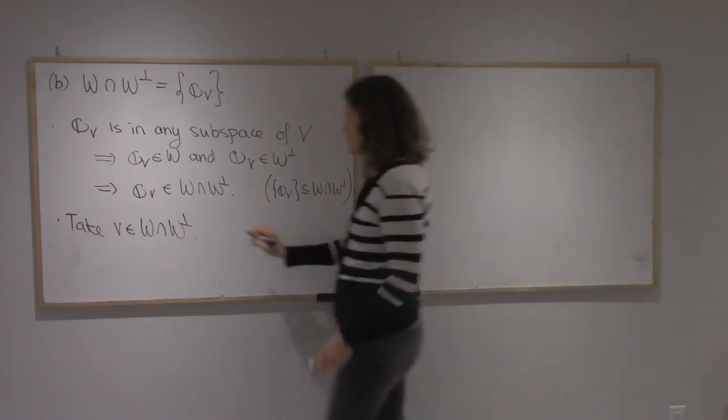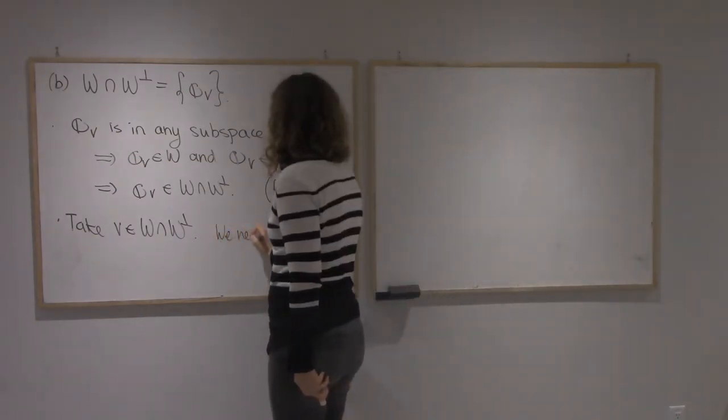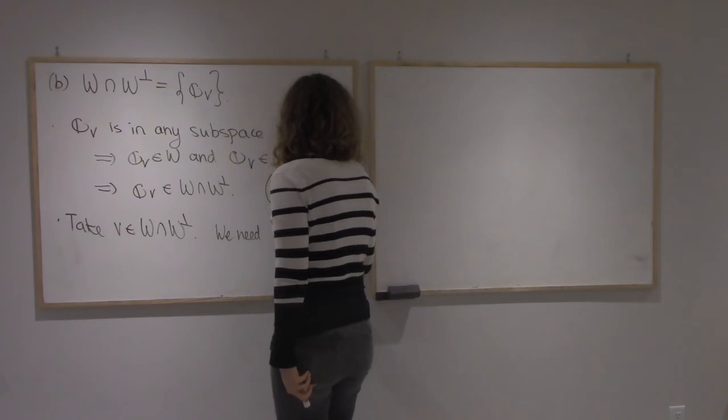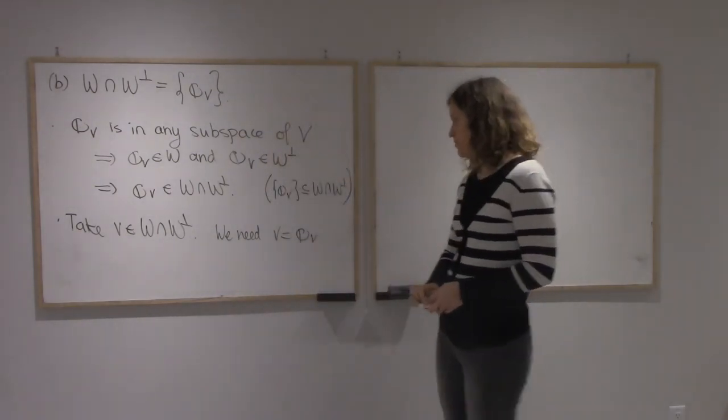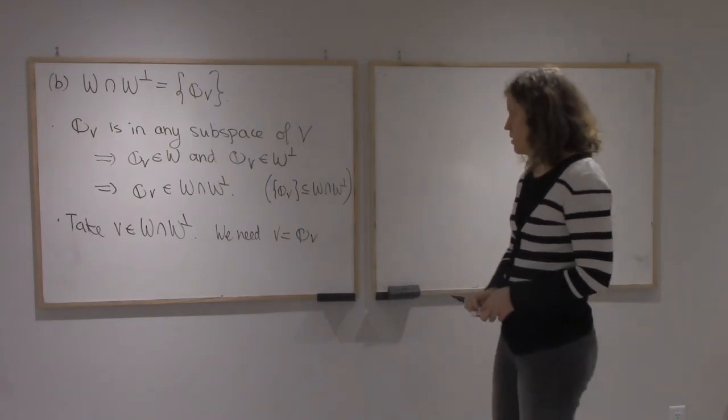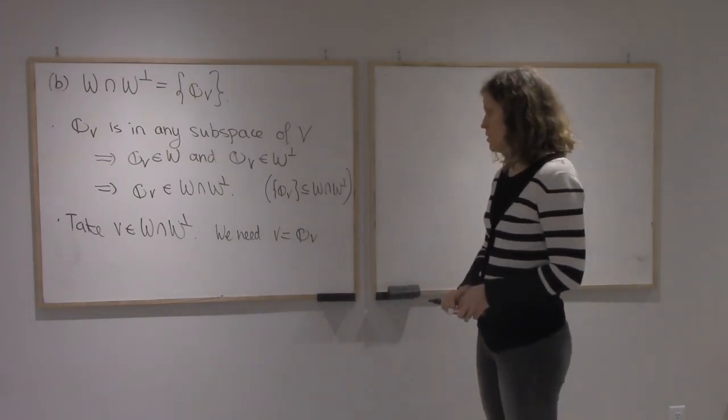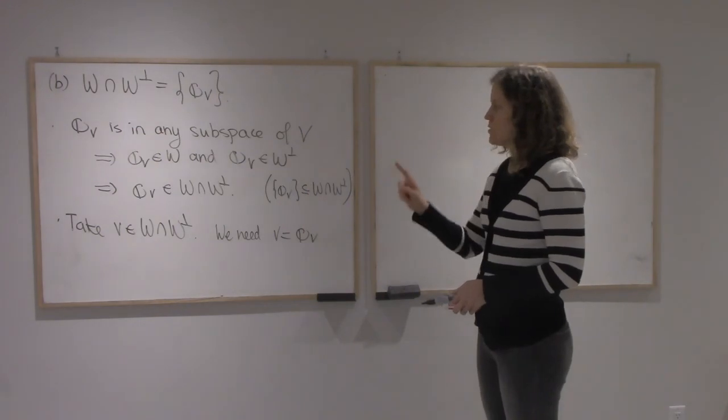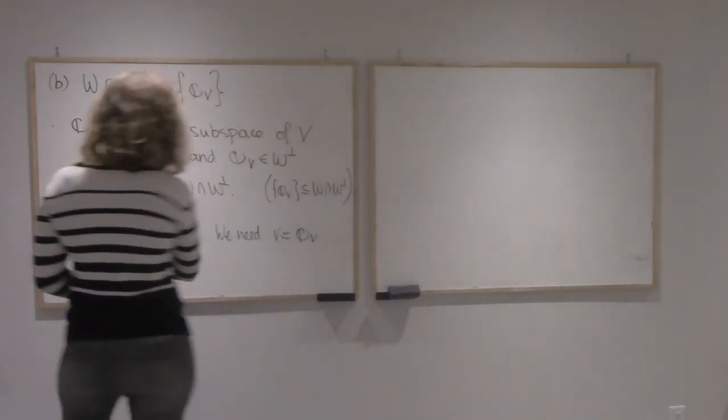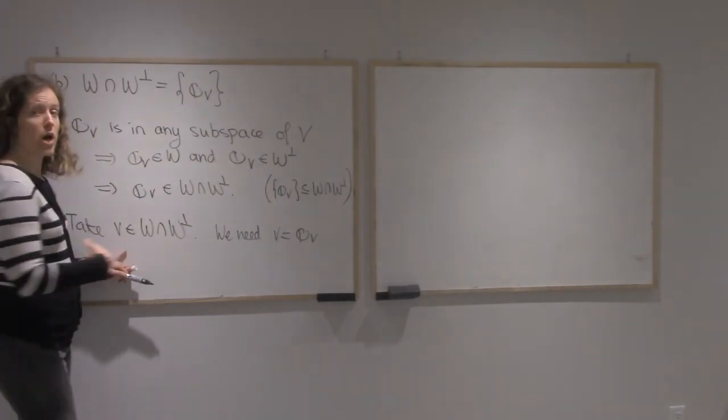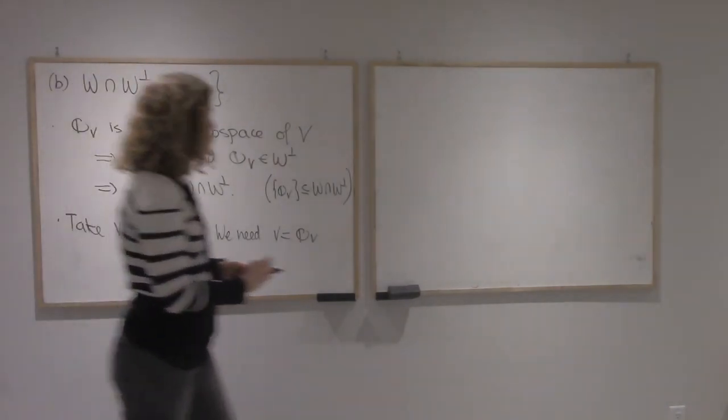Alright, so we need to prove that v is the 0 element of V. Alright, so here this is a bit tricky. I'm going to use v. I'm going to use the fact that v is in W-perp to say it's perpendicular to anything in W.